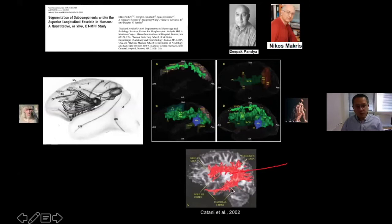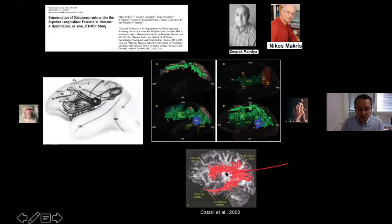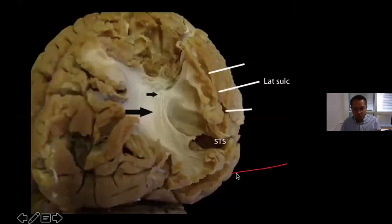The fifth and most recently described component — first introduced in diffusion imaging by Catani — is the posterior component. These are shorter fibers connecting the parietal to the temporal lobe, while SLF fibers are frontal-parietal and the arcuate provides frontal-temporal connections. So we have five things to remember: SLF1, SLF2, SLF3, the arcuate fasciculus, and the posterior component (or posterior segment).